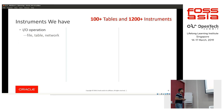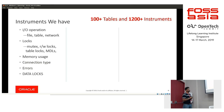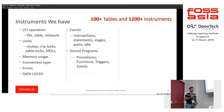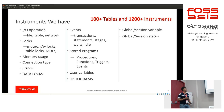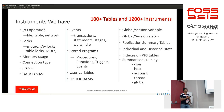In summary, MySQL 8.0 Performance Schema has 100+ tables and 1,200+ instruments covering I/O operations, logs, memory usage, connection types, transactions, statements, stages, stored programs (procedures, functions, triggers, events), global and session variables, global and session status. Summary tables with indexes are categorized by user, process, account, and session.